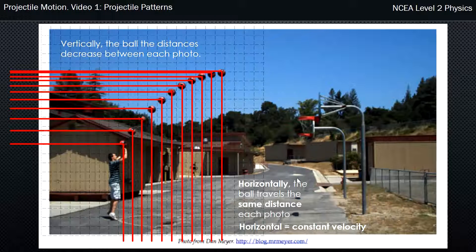Vertically, those gaps are getting smaller and smaller. There's a decrease in the gaps as we get higher and higher. That tells us that the velocity is changing, and we have a name for changing velocity, and that is acceleration.